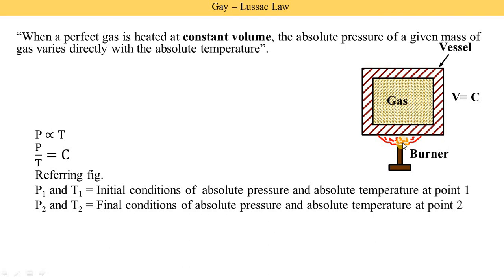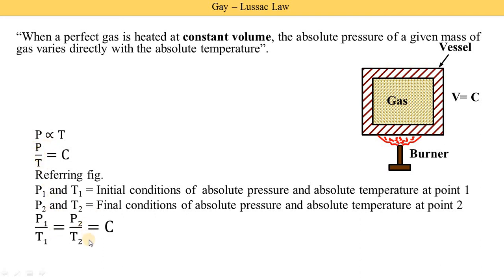After we start to supply heat energy by the burner, its pressure and temperature are changed — this is called the final condition. The final condition of absolute pressure and absolute temperature at point 2 is denoted as P2 and T2. For these two conditions, we can write: P1 upon T1 equals P2 upon T2 equals constant.